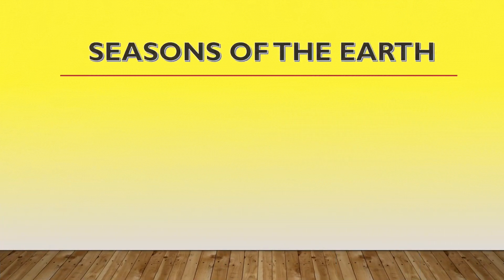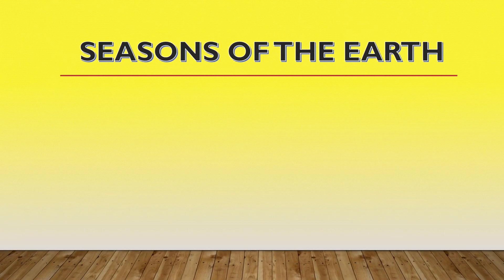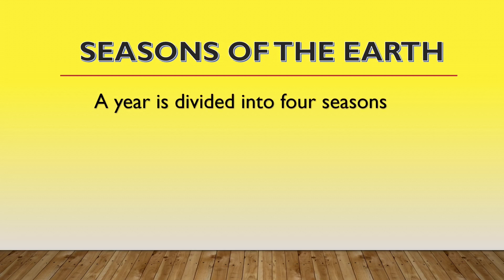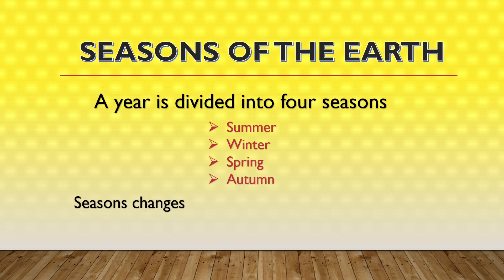Seasons of the Earth. A year is divided into 4 seasons: Summer, Winter, Spring, and Autumn. Seasons change due to the position of the Earth around the Sun.